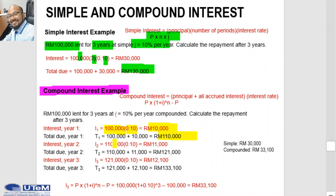In year 2, the principal is now RM110,000 because it has been topped up with the interest from year 1. So 10% of RM110,000 is RM11,000. Adding RM11,000 to RM110,000, the total due at year 2 is RM121,000.